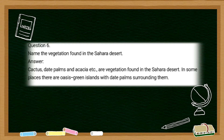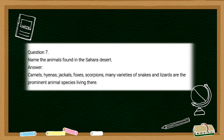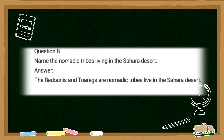In some places there are oases — green islands with date palms surrounding them. The seventh question is: name the animals found in Sahara desert. The answer is camels, hyenas, jackals, fox, scorpion, many varieties of snakes and lizards are the prominent animal species living there. The eighth question is: name the nomadic tribes living in Sahara desert.